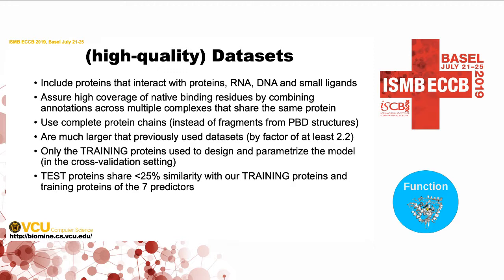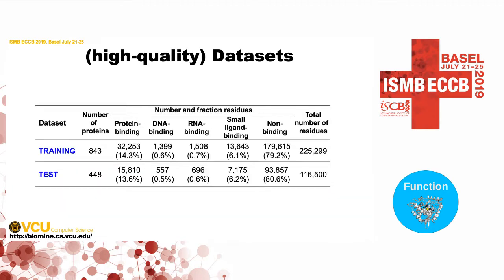Lastly, we took our dataset and split it into two parts — one for training, one for testing — making sure that the testing part is dissimilar at the 25% level to our training set and the training sets of all methods we test against. So it's a fair test set. The training and test set — you can see the size, about 1,300 proteins. Two thirds in the training set, one third in the test set. You can see the breakdown of different types of binding residues in that set, with complete coverage of all different ligands.